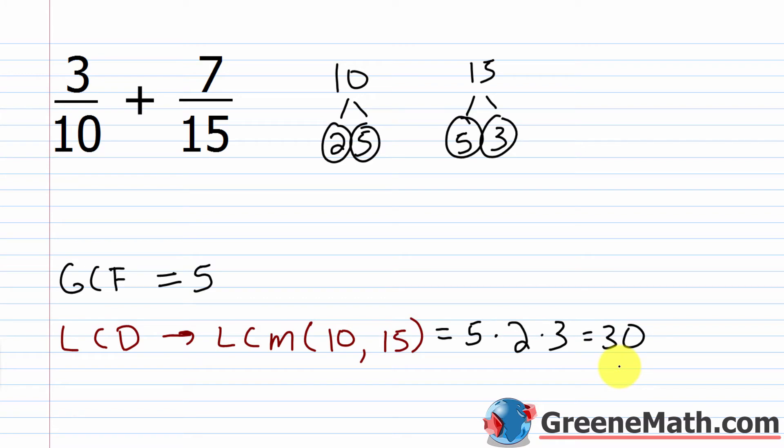That's a trick I was taught back in eighth grade. A lot of students struggle with the definition between the GCF and the GCD — which are the same thing — and the LCD, the least common denominator, which is the LCM of the denominators. The GCF/GCD is a smaller number; the LCD/LCM is a larger number. That's how you get an understanding of it.